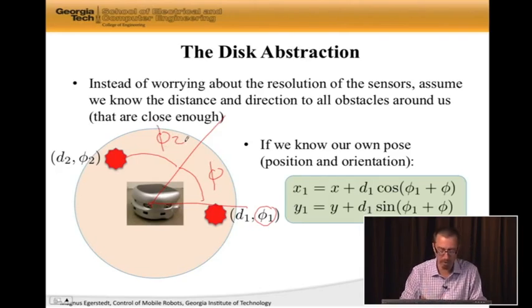Then, of course, the actual direction to obstacle two is gonna be phi two plus phi. So, what we can do is we can take this into account and compute the global positions of these obstacles if we know where the robot is. So, for instance, the global position of obstacle one, x one and y one.